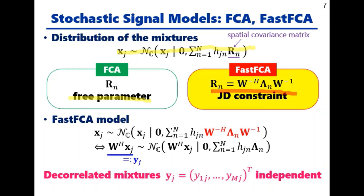In both FCA and FastFCA, the mixtures X are modeled by this distribution. The difference lies in how the spatial covariance matrix R is parameterized. In FCA, it is a free parameter, whereas in FastFCA, it is parameterized based on joint diagonalization. By plugging this into the distribution, we obtain the FastFCA model as shown here.